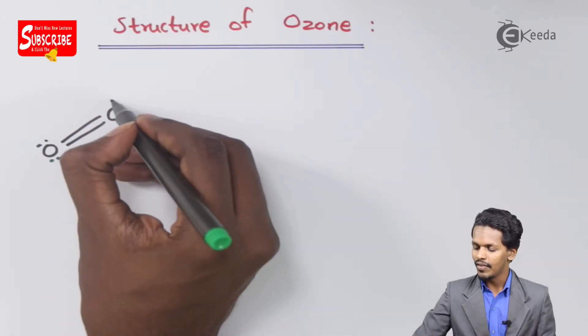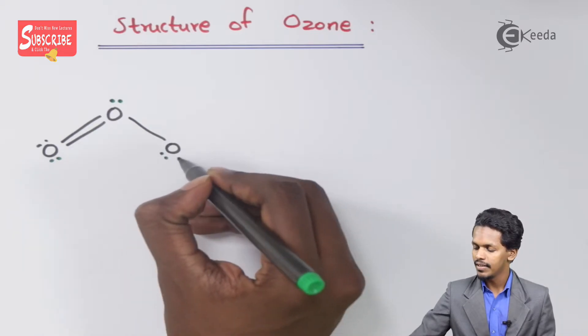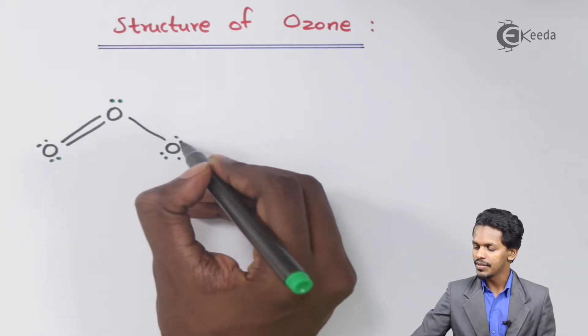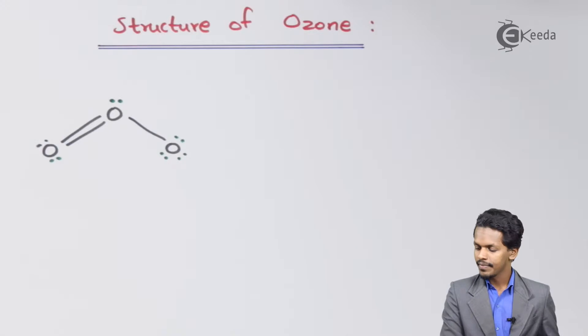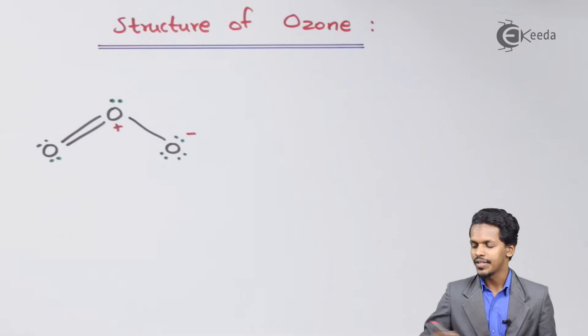While here it will be having only one lone pair of electron and here it will have basically three lone pair of electrons, making this oxygen item to be negative, while this oxygen to be positive.